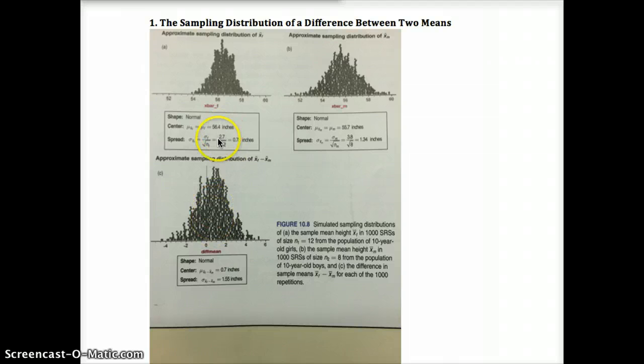For spread, we check the independent condition. We'd have to be sampling from a population that's at least 10 times as large, if we're sampling without replacement. We'd also have to have one value not affect another.